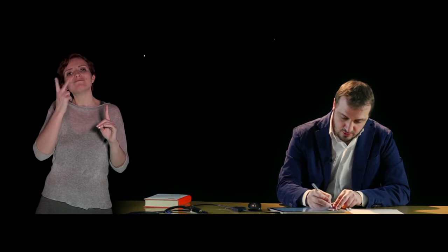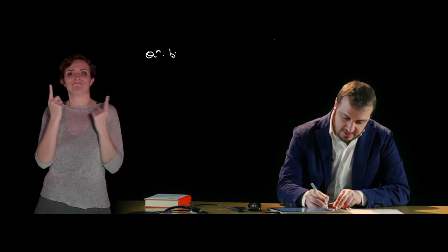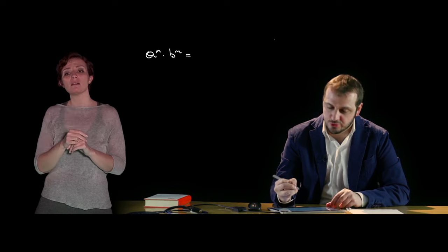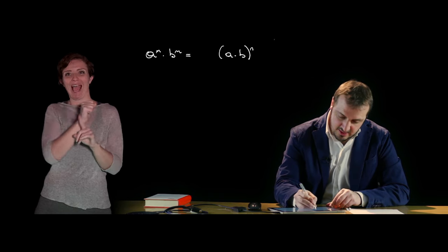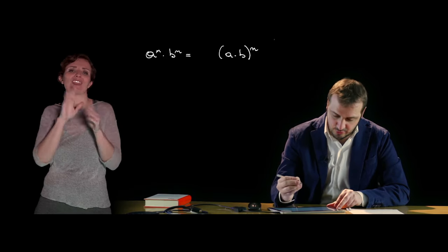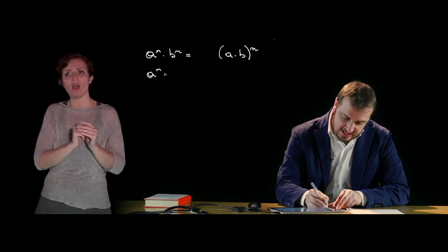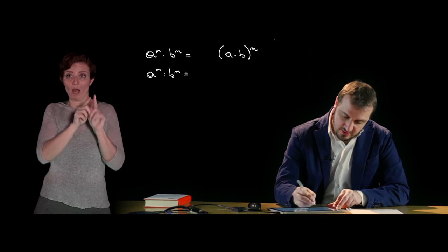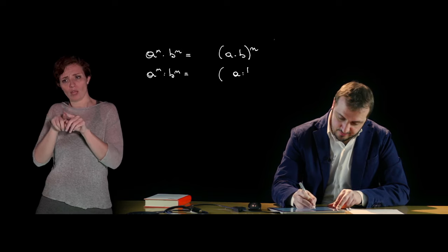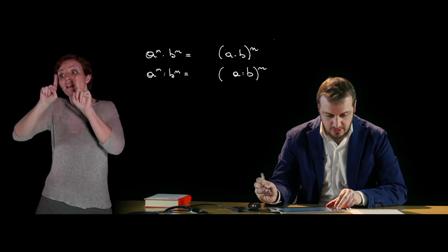Poi abbiamo altre due proprietà molto importanti che riguardano il prodotto di potenze caratterizzate dal medesimo esponente. In questo caso avremo A alla n per B alla n, che sarà pari a una potenza che ha per base il prodotto delle basi, quindi A per B, e per esponente il medesimo esponente. Il discorso analogo riguarda il quoziente di potenze di uguale esponente, quindi A alla n diviso B alla n, che è uguale a una potenza che ha come base il rapporto tra le due basi e come esponente il medesimo esponente.